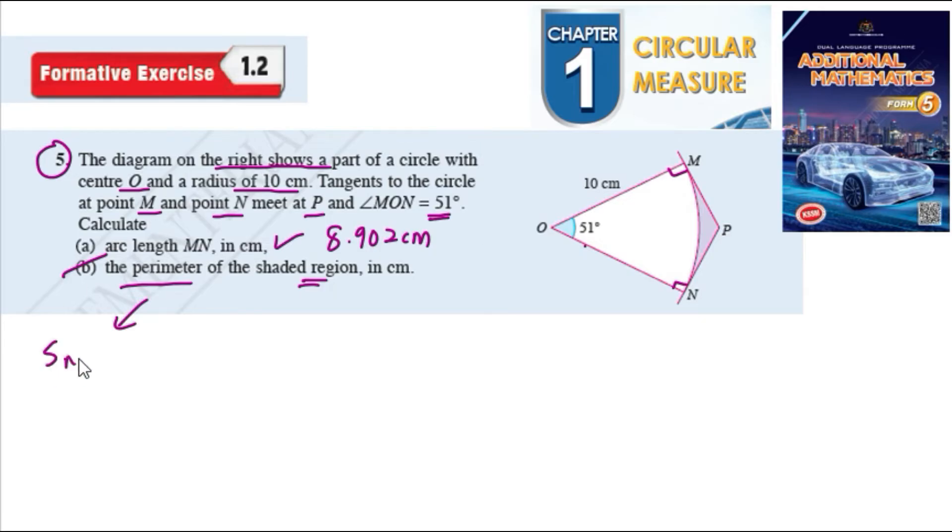So you need to know what is MP plus PN. So we know this is 90 degrees, so we can divide the triangle into two. So this is 51, so half of 51 is 25.5 degrees. So you can use trig, which is SOH CAH TOA.